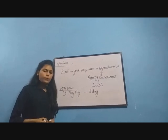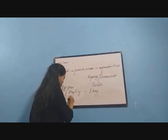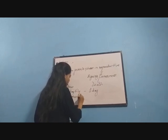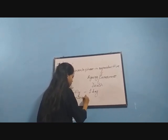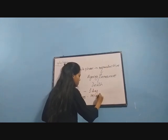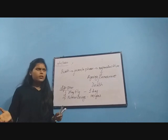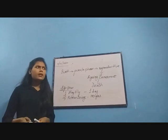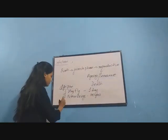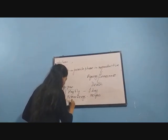An organism like human beings — Homo sapiens — has an average life span of about 100 years. A typical rice plant can survive up to 3 to 4 months.